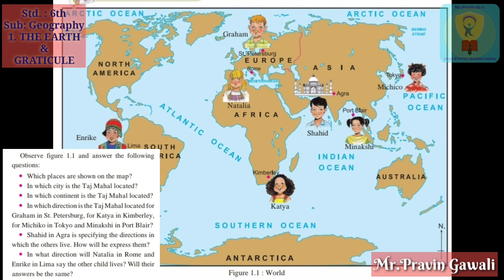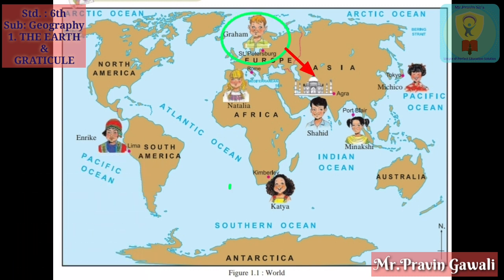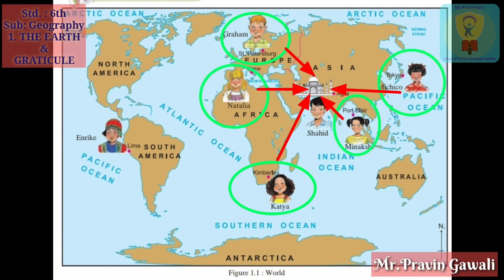Shahid in Agra is specifying the direction in which the others live — how will he express them? In what directions will Natalia in Rome and Enrique in Lima say the other child lives? Graham, Katya, Michiko, Natalia, Meenakshi, Shahid, and Enrique have answered the above questions differently using directions and sub-directions. The Taj Mahal is located at one and the same place — Agra. However, when each child told the direction from their respective place, their answers were different. This means that the use of directions alone does not help us to accurately describe the location of a place.